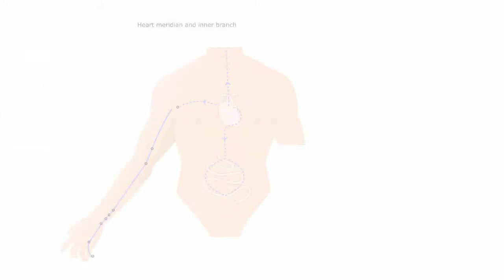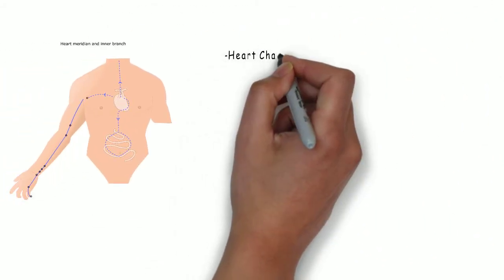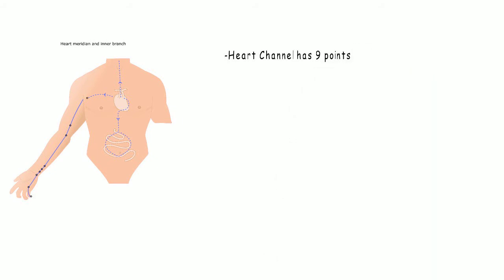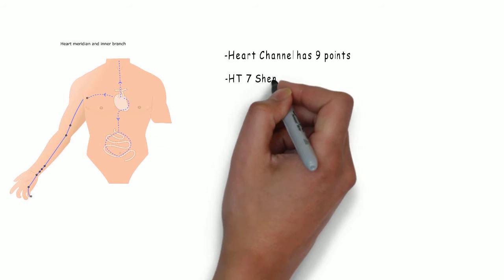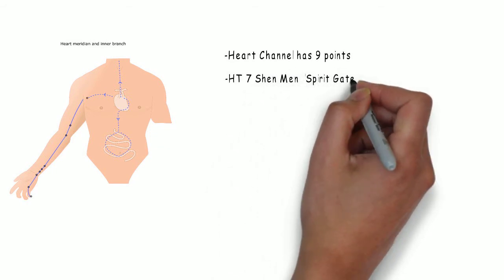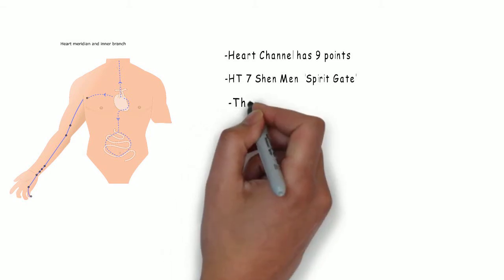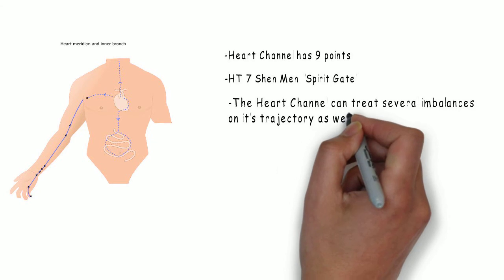We have the arm Shao Yin, the heart channel, and the leg Shao Yin, the kidney channel. The heart channel has nine points. It starts at heart one at the center of the axilla and travels along the medial aspect of the upper arm through the palms to heart nine. On the heart channel we have a famous point, heart seven, Shen Men, the spirit gate. The heart channel can treat several imbalances on its trajectory as well as stress, anxiety, and heat.